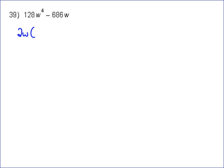Definitely a 2 goes in, and definitely a W. So we pull out a 2W. That leaves us with: divide 128 by 2 and with one W outside, we need 3 Ws left inside, giving 64W³. Then taking 2 out of 686 gives us 343, and pulling out the W leaves just 343.